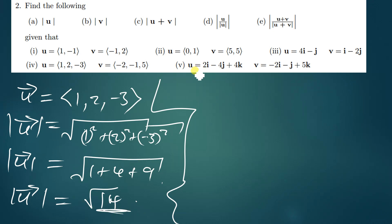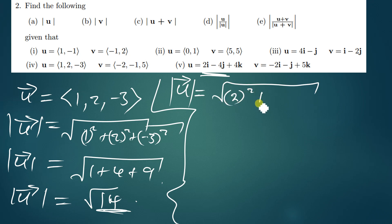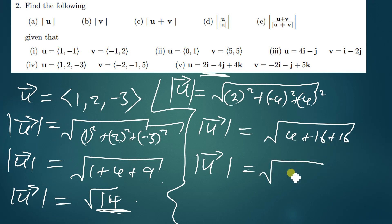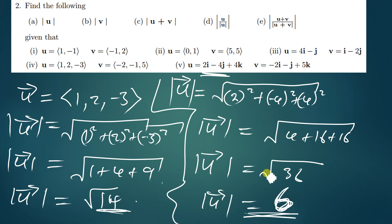Moving on to the U that is in 3D Cartesian form. The magnitude of this one is the square root of 2 squared plus (−4) squared plus 4 squared. This gives us the square root of 4 plus 16 plus 16, which equals the square root of 36. So the magnitude of U is 6.